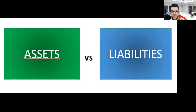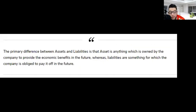In this infographic from Wall Street Mojo, we can see the difference between an asset versus a liability. The primary difference is that assets are anything owned by the company to provide economic benefits in the future, whereas liabilities are something the company is obliged to pay off in the future.